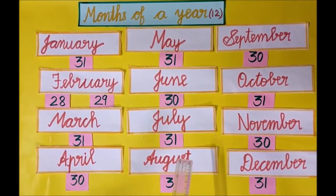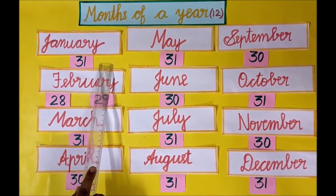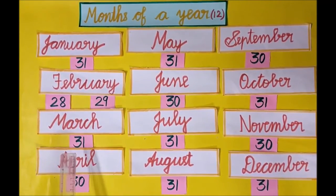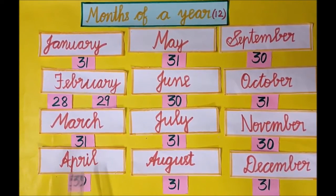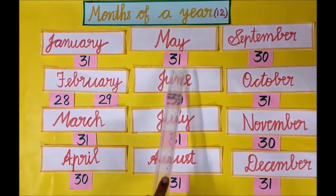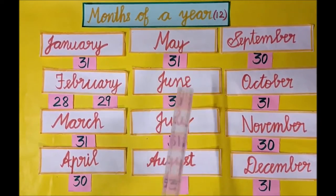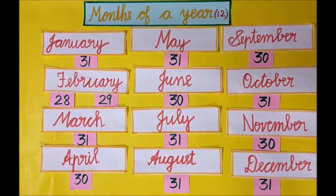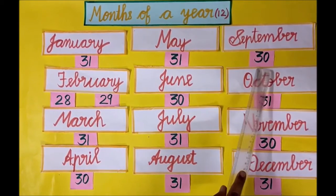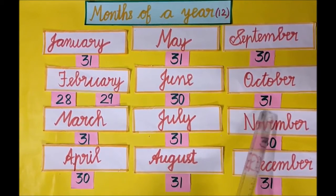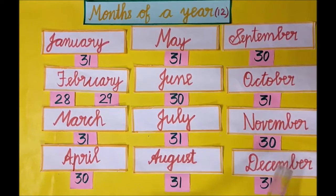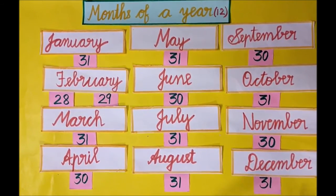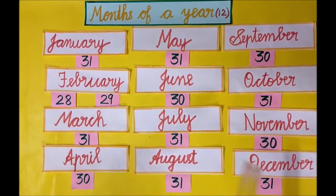Shall we recollect it once again. In January we have 31 days. In February we have 28 days in a normal year and 29 days in a leap year. In March 31 days. In April 30 days. In May 31 days. In June 30 days. In July 31 days. In August 31 days. In September 30 days. In October 31 days. In November 30 days. And in December 31 days. Hope you all understood — 12 months of a year.